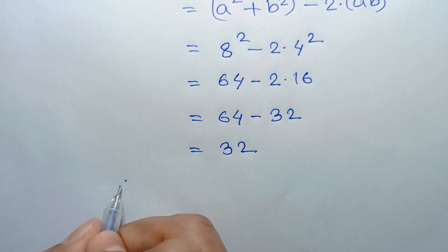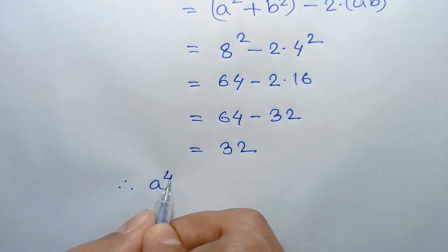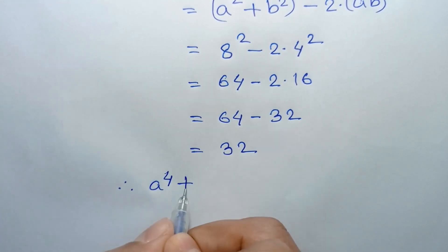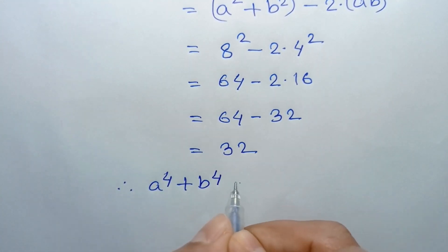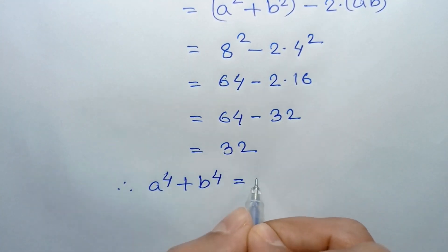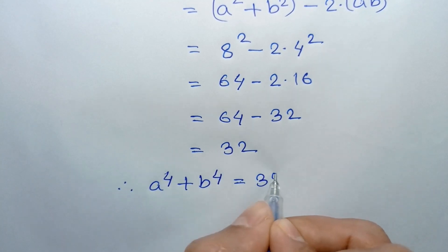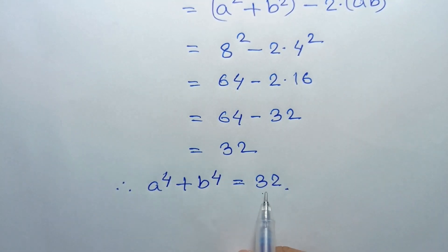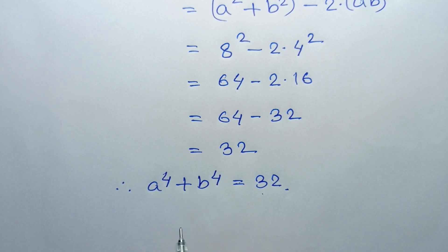So the value of a to the power 4 plus b to the power 4 is equal to 32. This is the value of a to the power 4 plus b to the power 4. If you like this video, please subscribe to my channel. Thanks for watching. Bye.